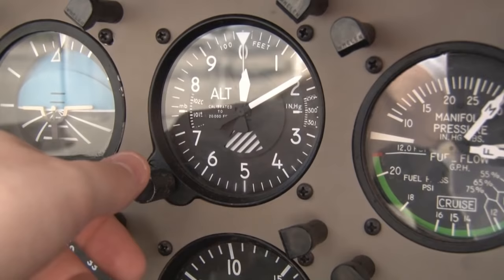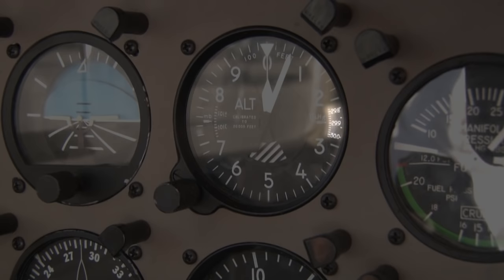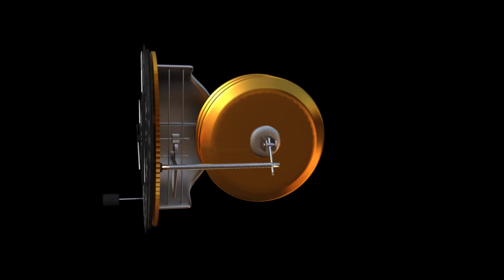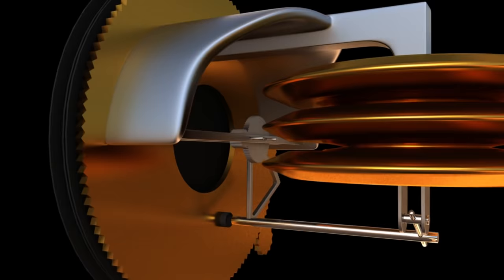Once the pilot knows the current atmospheric pressure, also known as the altimeter setting, all they have to do is rotate the dial on the lower left side of the instrument until the current pressure is selected in a little window on the face, called the Kollsman window. This then realigns the gears inside and the instrument reads accurately. The realignment is accomplished by rotating the entire inside mechanics of the instrument.